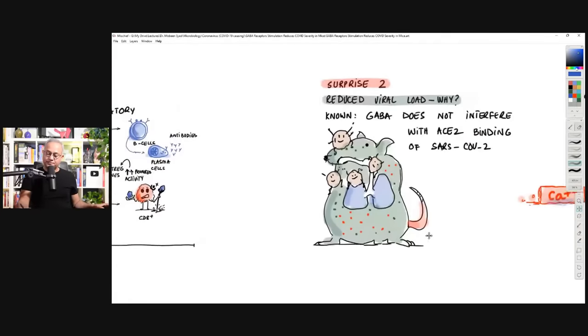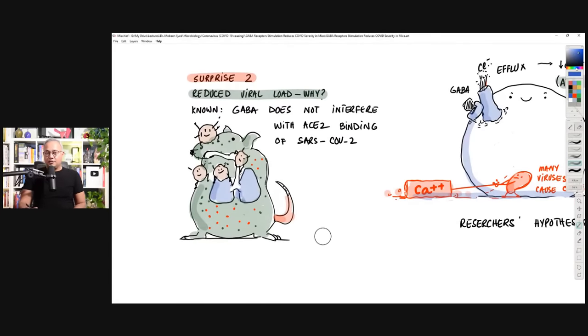And they say that we're not fully sure what are the exact mechanisms that are at play. But the first surprise for them was it is actually needed in the early part instead of the later part. Second, they saw that administering GABA reduced the viral load. So then the question became, why did the load of the viral load reduce? So one possibility is that maybe GABA is breaking down the virus. But GABA doesn't do that. So then how come it reduces the activity? So this was another surprise for them.